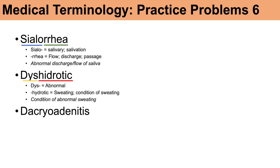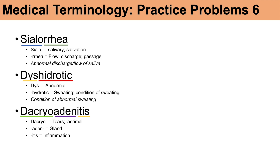The next word is dacryoadenitis. Breaking it down: 'dacryo' means tears or lacrimal, something to do with lacrimation. 'Aden' — you can think of adenopathy — means gland. And '-itis' means inflammation. So dacryoadenitis means inflammation of a lacrimal or tear gland.